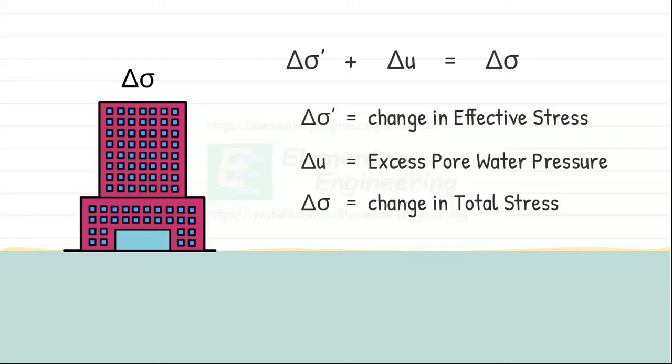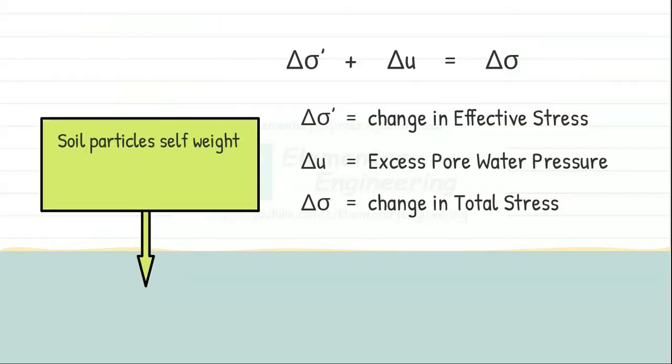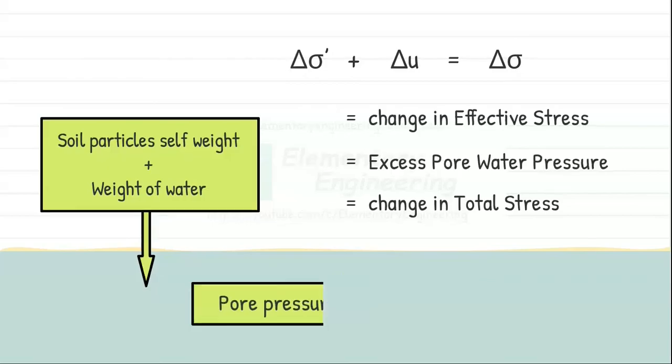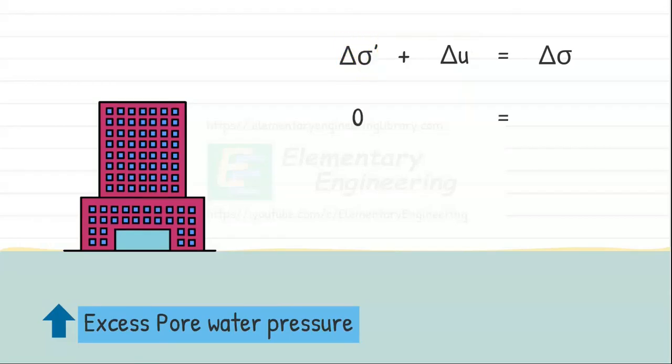We expressed all the quantities as a change in their values. Because before applying the additional stress delta sigma, there existed a load of particles self-weight and weight of water which soil particles were already supporting. Also because of that, there was some water pressure in the pores. But initially, just after the application of pressure, the entire load is taken by water, which caused to increase the water pressure, which is known as the excess pore water pressure, delta U. Since no pressure is taken up by soil particles at this moment, the change in effective stress is zero. So we can write that at t equal to zero, excess pore water pressure is equal to the total stress applied to the soil.